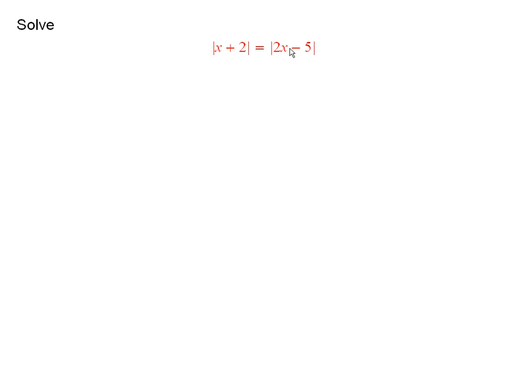Now, there are exactly two ways this can happen. Here are the two ways. Either they are the same number, in this case, or one of the numbers is the additive inverse of the other number.